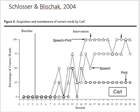Here's an example with a pre-treatment baseline. In this study, the authors compare print, speech, and speech-print for participant Carl. What we're looking for is level and trend — is there a separation? Does it look like we have a superior treatment method for this non-reversible behavior?